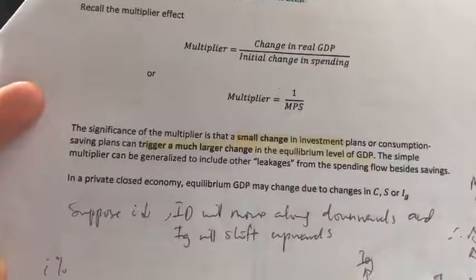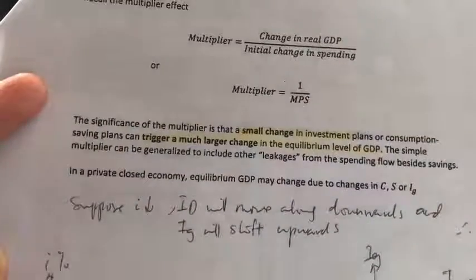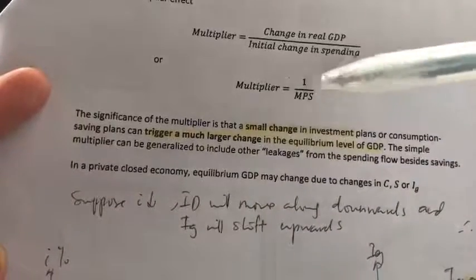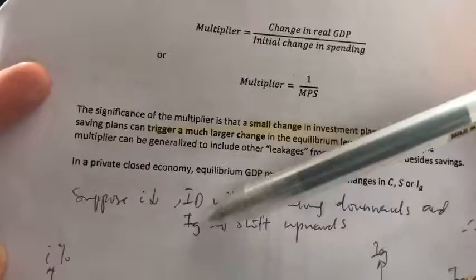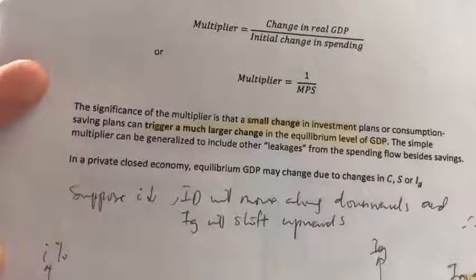Now, let's look at this example. Suppose there's a fall in real interest rate. How will that affect investment? There will be two effects here because we know that there's a difference between investment demand curve, ID, and investment schedule. Okay, we learned this at the beginning of topic five.